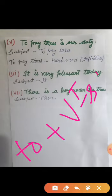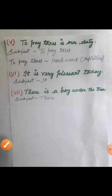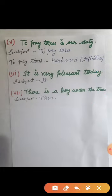Next examples: 'It is very pleasant today' — in this sentence the subject is 'it.' And 'There is a boy under the tree' — in this sentence the subject is 'there.' Now in both sentences, 'it' and 'there' are called dummy subjects. Dummy means there is no sense of its own in the sentence.